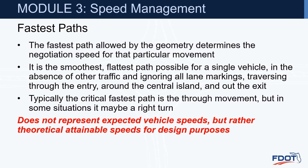The fastest path allowed by the geometry determines the negotiation speed for that particular movement. It is the smoothest, flattest path possible for a single vehicle in the absence of other traffic and ignoring all lane markings, traversing through the entry, around the center island, and out the exit. Typically the critical fastest path is the through movement, but in some situations it may be a right turn. This does not represent expected vehicle speeds, but rather a theoretical attainable speed for design purposes.